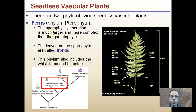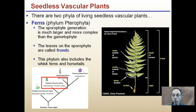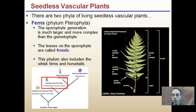The sporophyte generation is much larger and more complex than the gametophyte. Remember: the gametophyte is going to produce gametes, and the sporophyte is going to produce the spores. Leaves on a sporophyte are called fronds — so this gets into just a little terminology here. Looking at the seedless vascular plants, in particular ferns, this entire structure isn't called a leaf — it's called a frond. This phylum also includes whisk ferns, and horsetails also fall into this category.